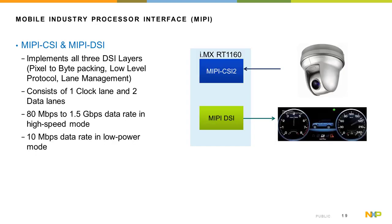For the MIPI interfaces, the MIPI DSI interface implements all three DSI layers from pixel to pipe backing, low level protocol, and lane management, and essentially consists of one clock lane and two data lanes, with a high speed mode running up to 1.5 gigabits per second and a 10 megabits per second data rate in low power mode. Compared to parallel interfaces, MIPI DSI and CSI interfaces are lower power and take up less board space due to the serial connectivity.